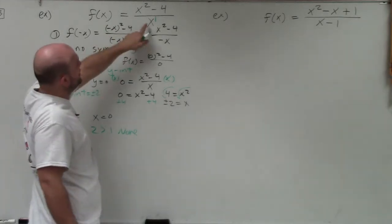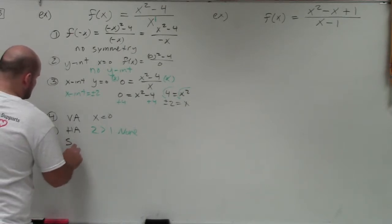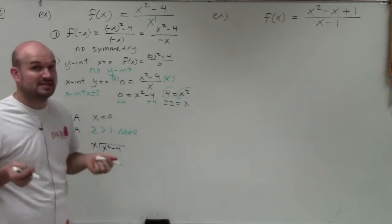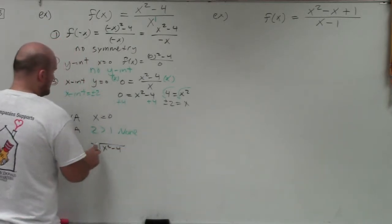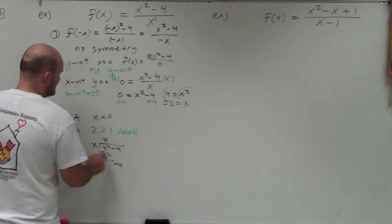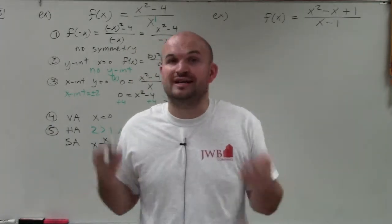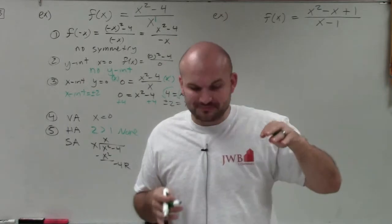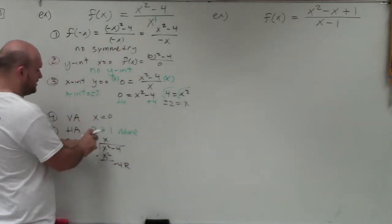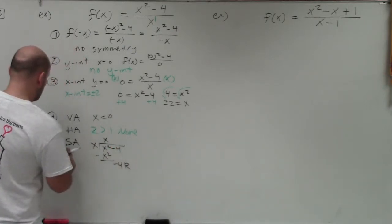To find the slant asymptote, we divide the denominator into the numerator. So I'll do x divided into x squared minus 4. x divides into x squared giving x; x times x is x squared. Subtract the two rows and you get negative 4 as the remainder. x does not divide into negative 4. When creating the slant asymptote equation, you only use the quotient, not the remainder, because the remainder approaches infinity. So my slant asymptote is y equals x.